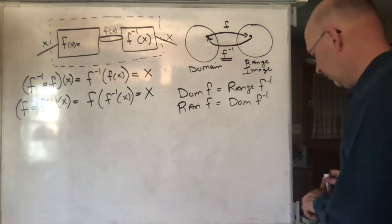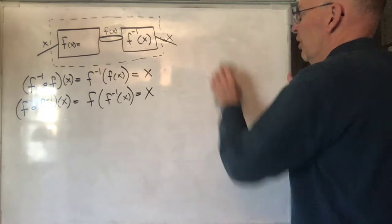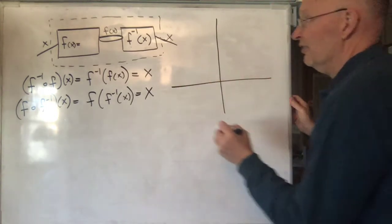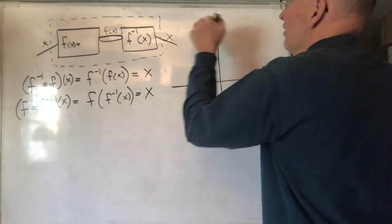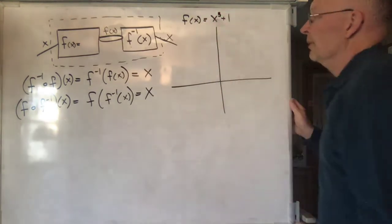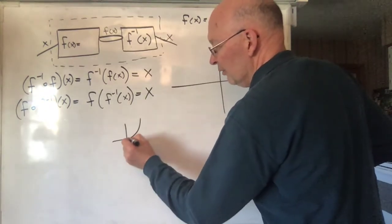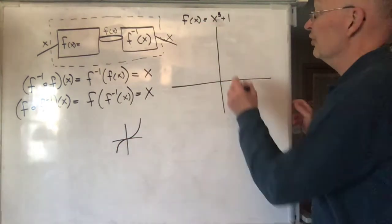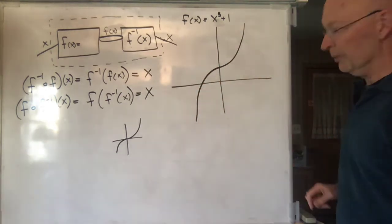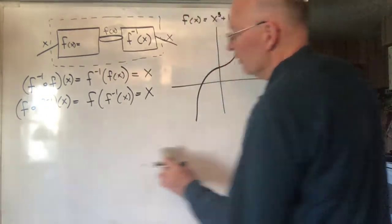How do the graphs of these things compare to each other? Let's draw an example. Let's start with F of X is equal to X cubed plus 1. We know how to graph that. X cubed looks like this — remember that from a previous lesson — and if you add 1 to it, it just shifts it up. So there's X cubed plus 1. Now we want the inverse of this.